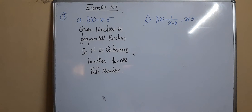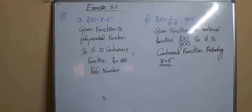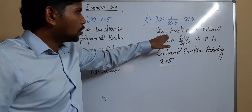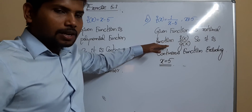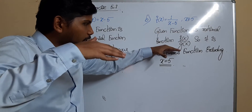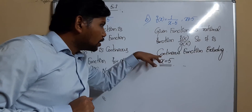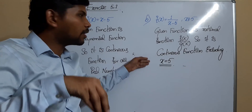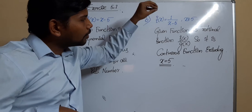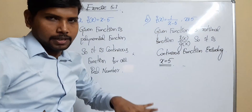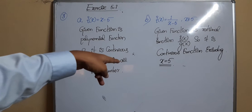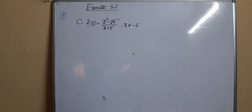The function f(x) = 1/(x − 5) is a rational function in the form f(x)/g(x), so it is continuous for all real numbers excluding x = 5. We exclude x = 5 because substituting 5 makes the denominator zero, giving an indeterminate form.